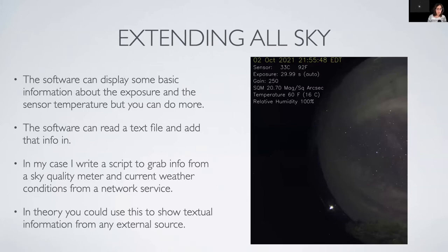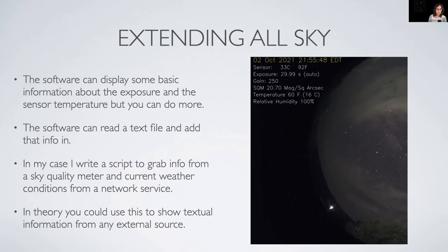The all-sky camera software can also be extended. In my case, I wanted to get a reading from my sky quality meter — you can see where it says SQM 20.7 magnitudes per square arc second. That data is coming from my all-sky camera via a little script I wrote to grab that information, format it into a file, and then the all-sky camera software reads that file and displays it. I'm also grabbing some weather information off the internet. The first four lines are provided by the all-sky camera software; the last three lines come from the extension I wrote.